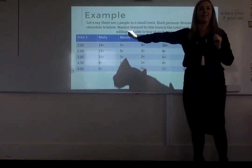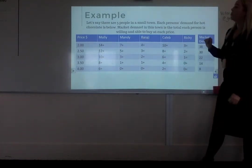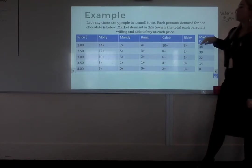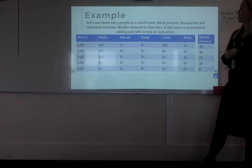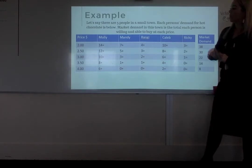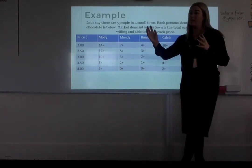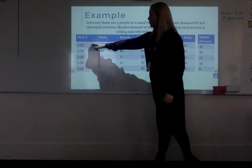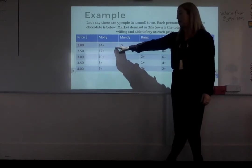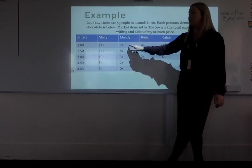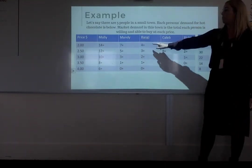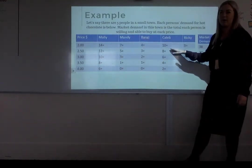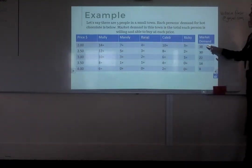This is an example of a demand schedule — you might remember this from term one. Let's say there are five people in a small town and each person's demand for hot chocolate is listed below. Market demand in this town is the total that each person is willing and able to buy at each price. In our first topic we looked at demand schedules individually; now we bring everyone together and look at the whole market's demand. At $2, Molly is willing and able to buy 14, Mandy 7, Rangi 4, Caleb 10, and Rikki 3 — so our market demand at $2 is 38.